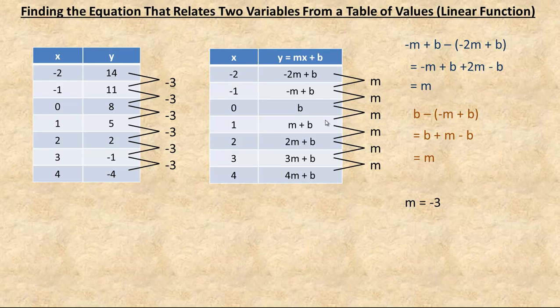Now, how you find b, you could take any of these and set them equal to their counterpart over here. So if I wanted to write negative 2m plus b equals 14 or negative m plus b equals 11 and solve for b because I know m, I could. But the simplest place to find b is to realize that b is the y-intercept. It's the y value when x is 0. So if we look over here, the y value when x is 0 would be 8. So that b must equal that 8. So b equals 8.